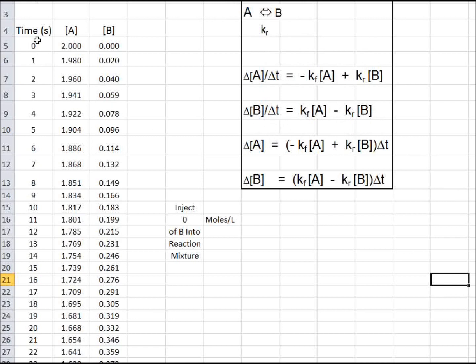Now we're going to move delta T to the other side, and delta T is always going to be one second. So the change in the concentration of A each second will equal minus Kf times the concentration of A, plus Kr times the concentration of B, times one second.